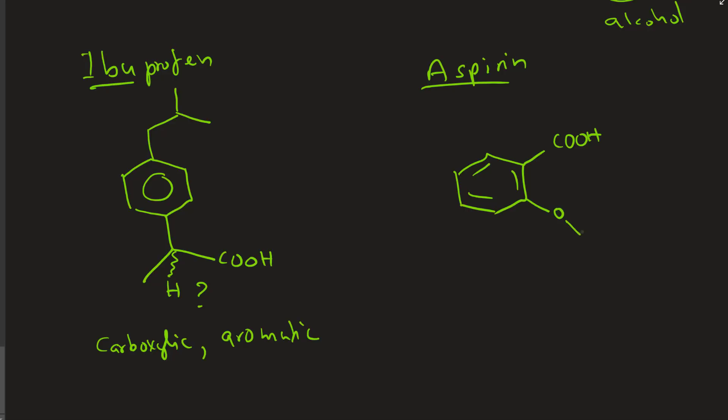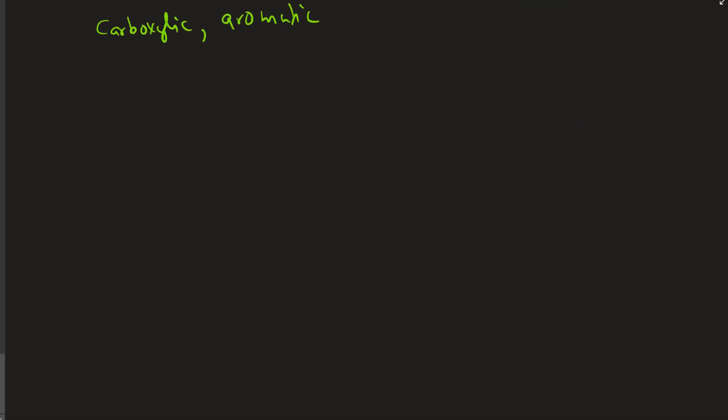Now let's look at the aspirin. Aspirin, you have carboxylic group, an aromatic ring, aryl. And then what's the other group? It's not a carboxylic. It looks like carboxylic, but it's an ester.